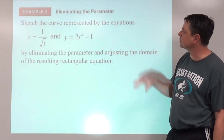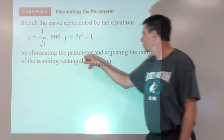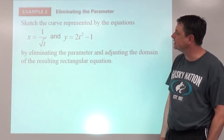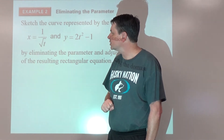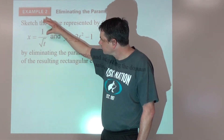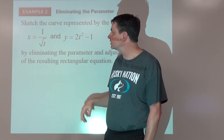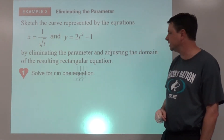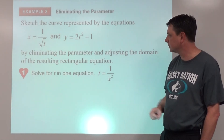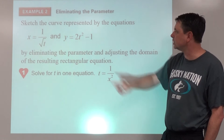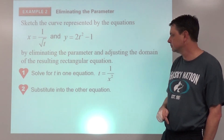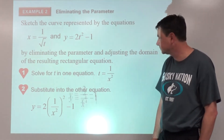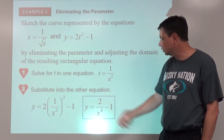Example two: sketch the curve by eliminating the parameter and adjusting the domain. We solve one equation for t — taking the reciprocal of both sides gives 1/x equals the square root of t, then squaring both sides gives t equals 1 over x squared. Substituting into the other equation: y equals 2 times (1/x²)² minus 1, which simplifies to y equals 2 over x to the fourth minus 1.